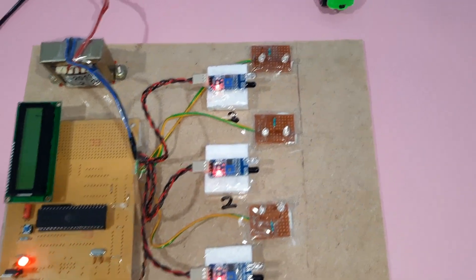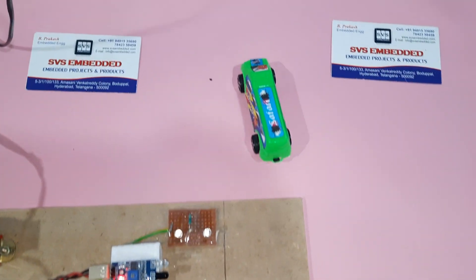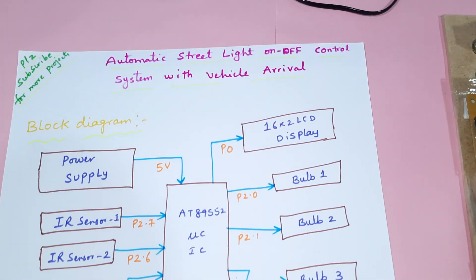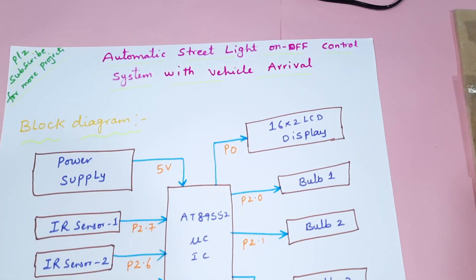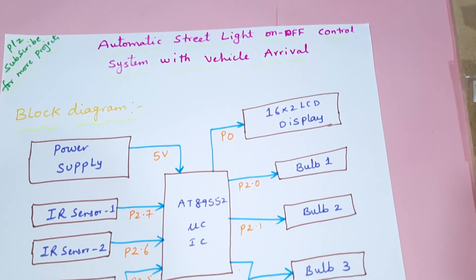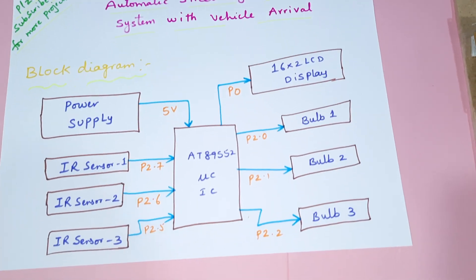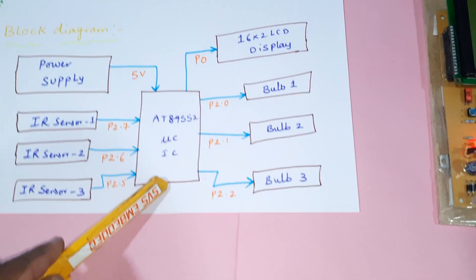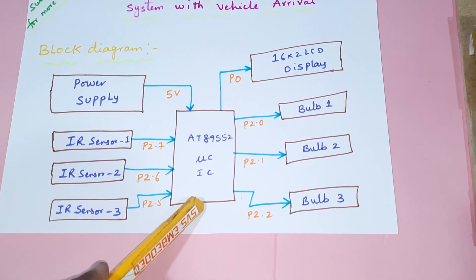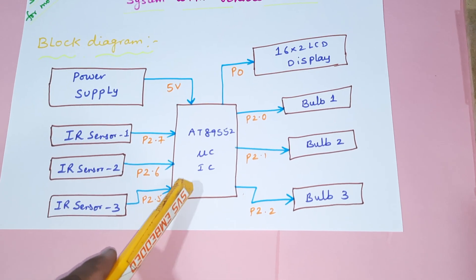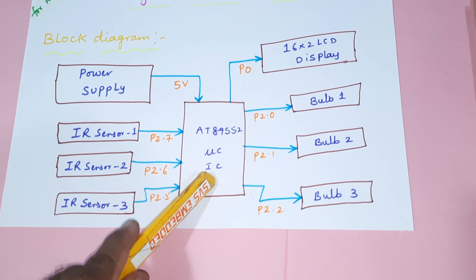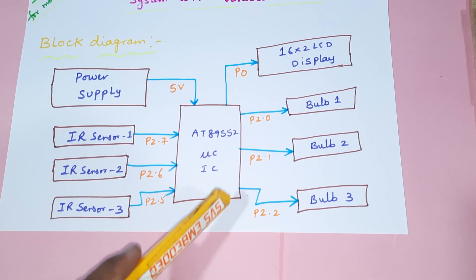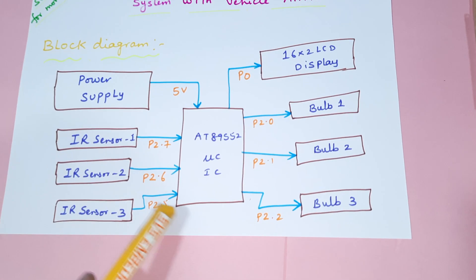Hi, we are from SVS Embedded. The project title is Automatic Street Light On-Off Control System with Vehicle Arrival. Here we are using the 8051 microcontroller — an 8-bit microcontroller with a total of 40 pins and four ports.